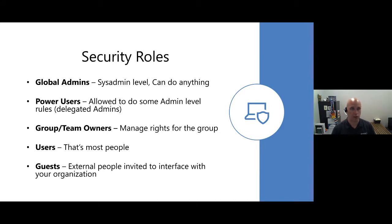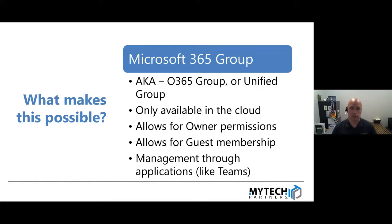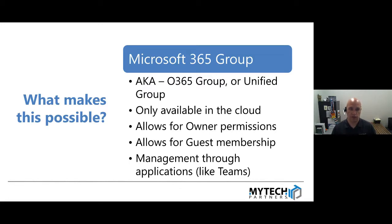What makes all this possible is something called a Microsoft 365 group — previously known as an O365 group, or a unified group in the back-end systems. A unified group is only available in the cloud, so it's not part of the same group structures as your local file server or Active Directory — it's strictly inside the 365 platform. It allows for owner and guest permissions, and it's the component that lets Teams, Planner, and all other tools be part of this structure.